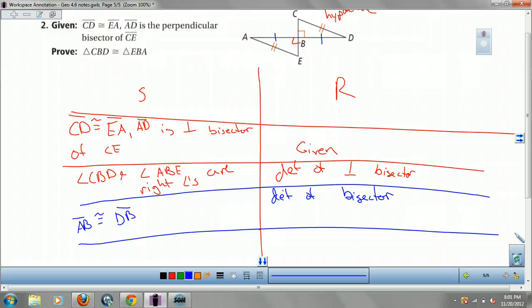So now are we done? Actually, yeah, we are, because we have a leg and a hypotenuse. So I can say triangle CBD is congruent triangle EBA by the HL hypotenuse leg theorem. And that's it, guys. Be ready for some proofs tomorrow. Enjoy. Bye bye bye.